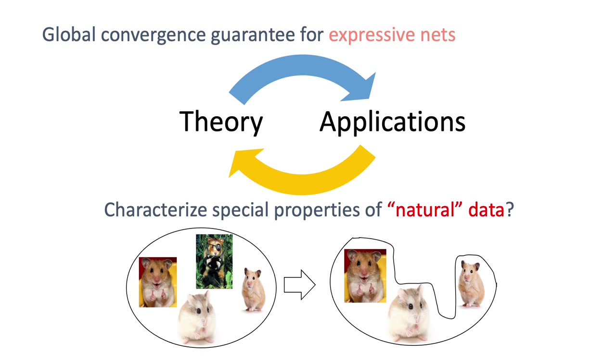So the next question is, can we actually finish the loop and think in practice, what are the special properties of natural dataset that allows real world practical neural nets to behave so well?